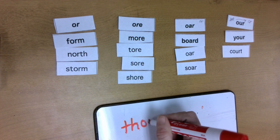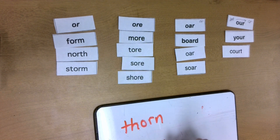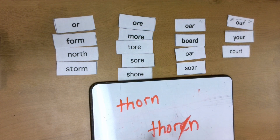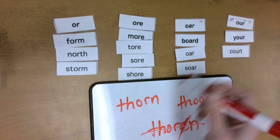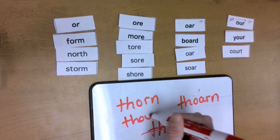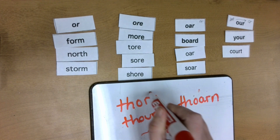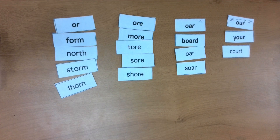My next word is THORN. Tap that out with me. THORN. I can write that in lots of different ways — but wait, that's a silent E pattern... how would I even spell THORN with a silent E in the middle of a word? No, I know that's wrong. Is it THORN like this or THORN like that? You're thinking this one — you've got it! Just a regular O-R.